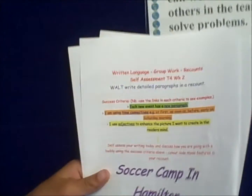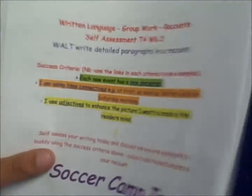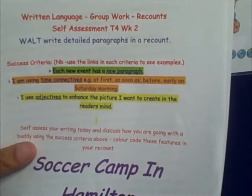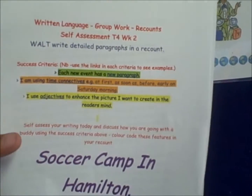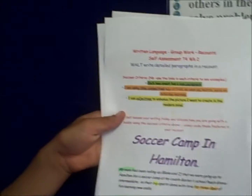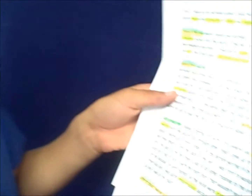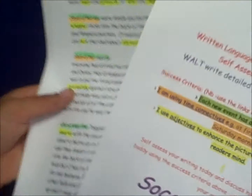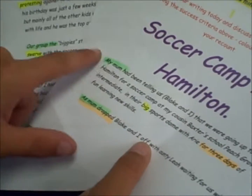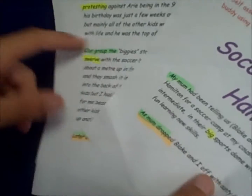This is my recount for Soccer Carnival. Our goal is to write detailed paragraphs in a recount, and the success criteria is that each event has a new paragraph. I've got these green highlights for where I've started new paragraphs. They're starting there, there, and there — I've got a lot of them. What helps me decide where a new paragraph starts is because I've done the gap between them.